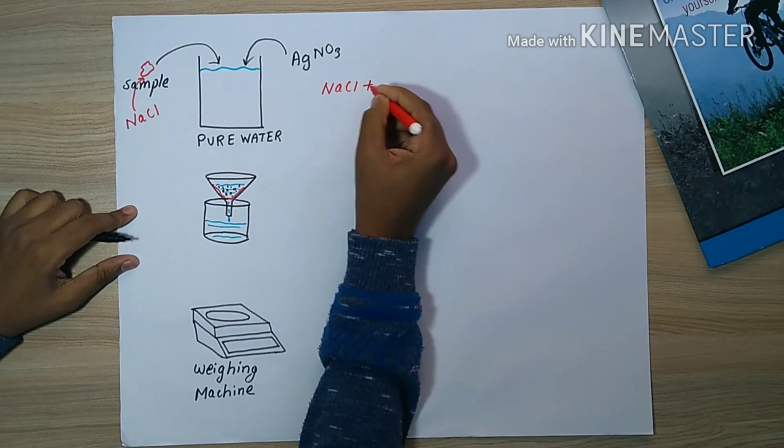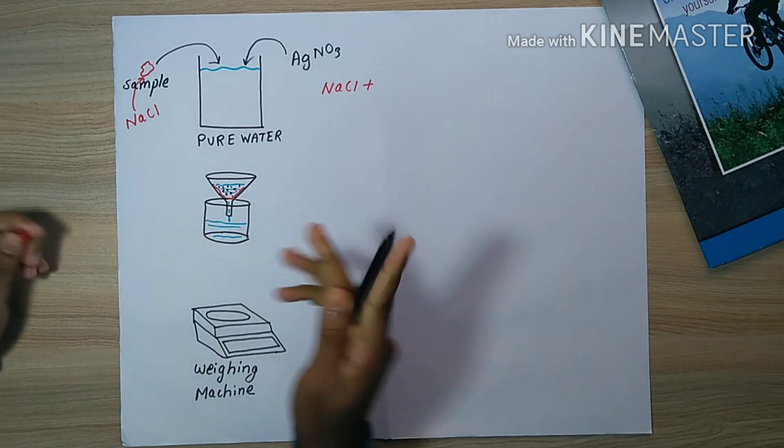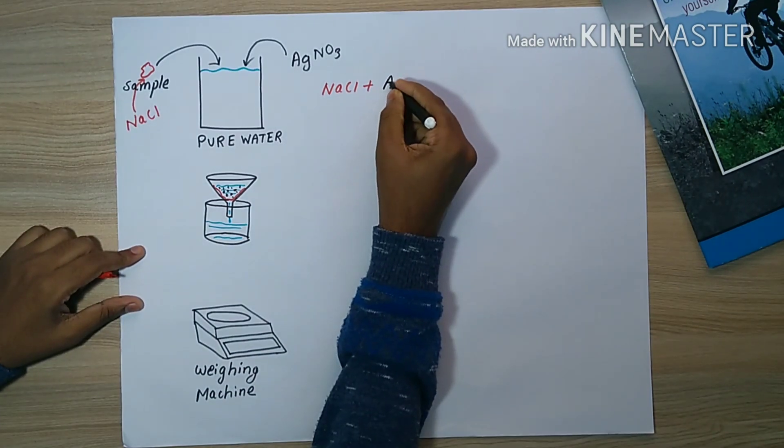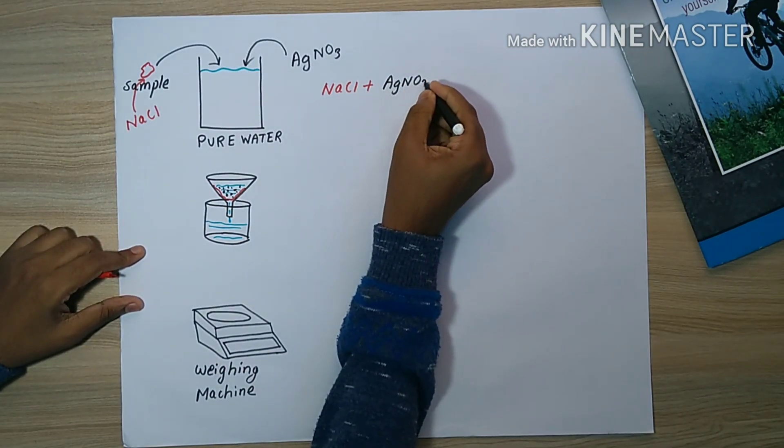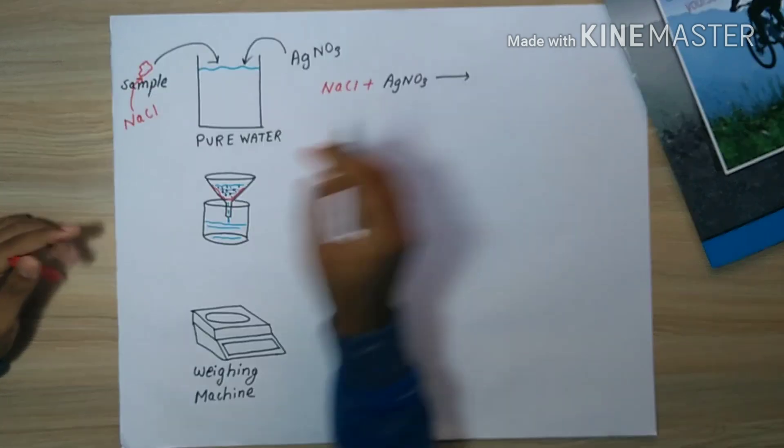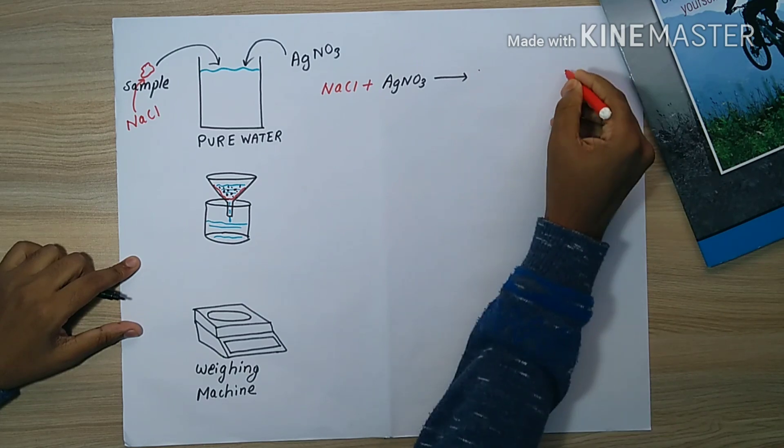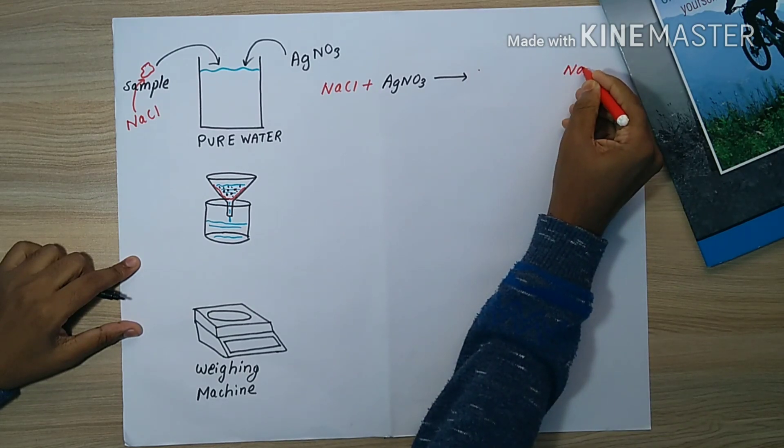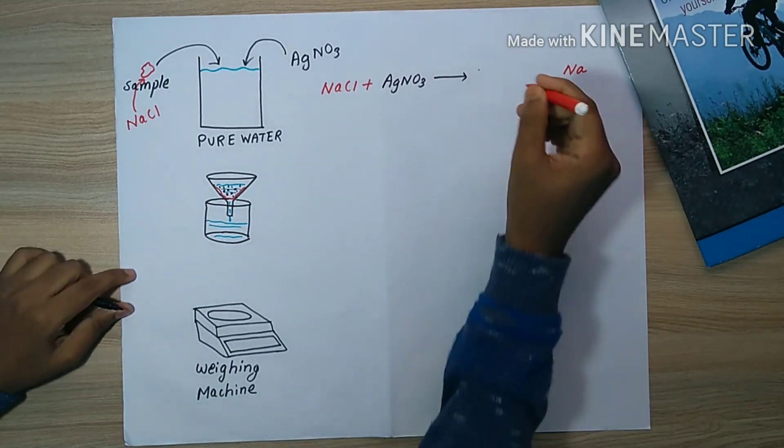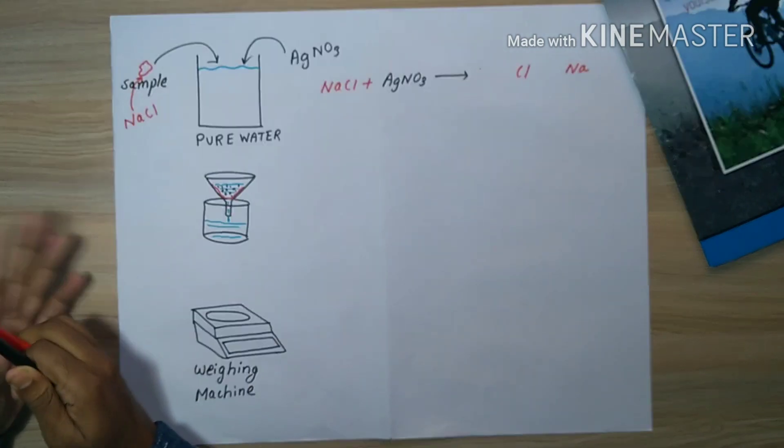Now what happens is that NaCl reacts with AgNO3 and a displacement reaction occurs. This displacement reaction causes the silver ion Ag to replace the sodium Na in NaCl.